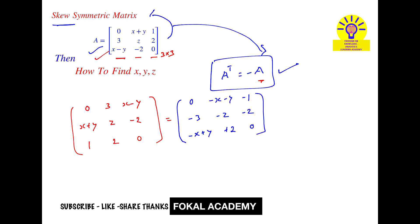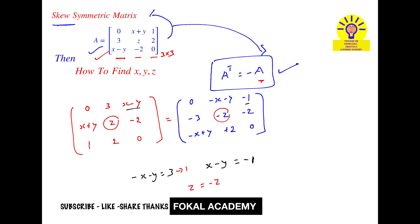Now equate the corresponding elements. From this we get: minus x minus y equal to 3 as equation 1, x minus y equal to minus 1 as equation 2, and z equal to minus z as equation 3.